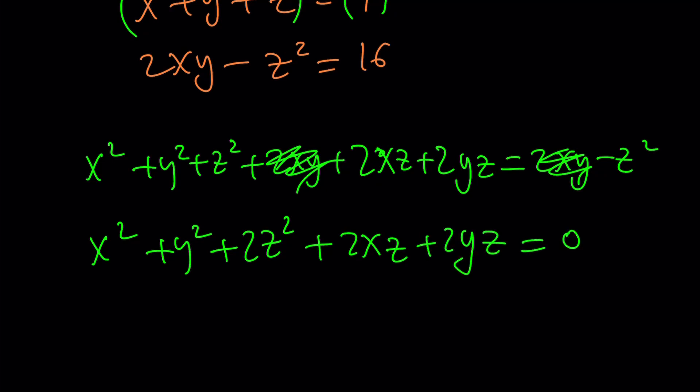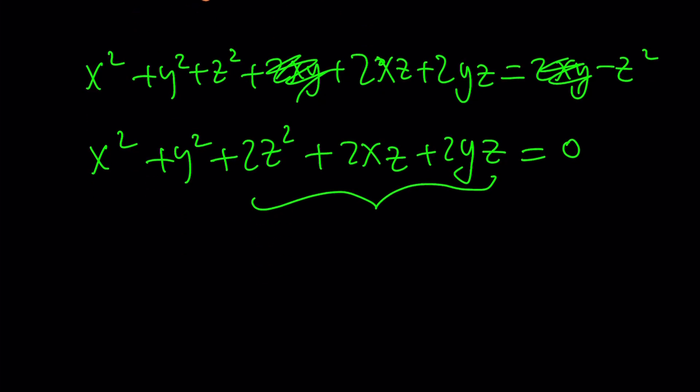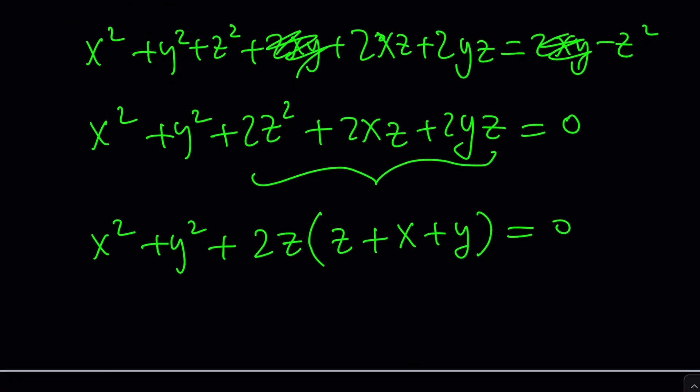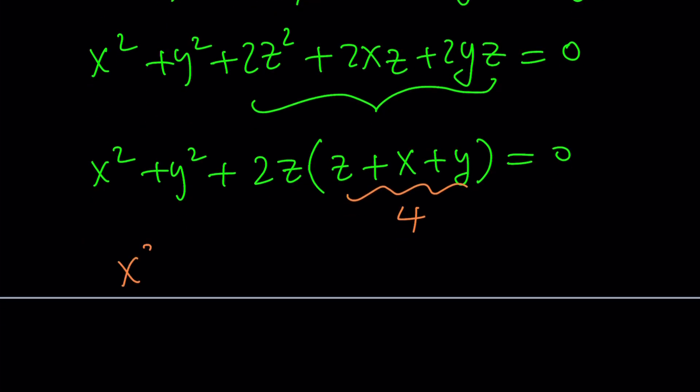2xy cancels out. And then we put the z squared on the left-hand side. We get 2z squared plus 2xz plus 2yz. Now this equation equals 0 but can I do something about this? Well, all these three terms, because I got rid of the 2xy, now I got something a little nicer. I'm thinking can I take out a 2z? Yes I can. And that gives me z plus x plus y. And guess what? I know z plus x plus y equals 4, so I can replace it with 4. And that gives us x squared plus y squared plus 8z equals 0.